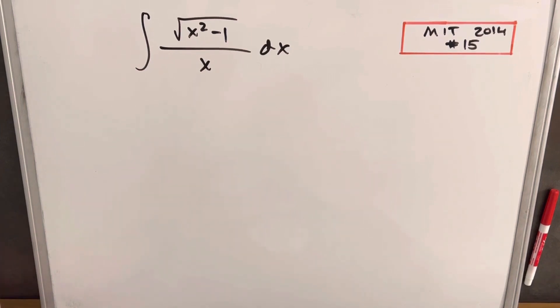Hey, we have here today an interesting integral from MIT Integration B 2014, problem 15. We have the integral of the square root of x squared minus 1 over x dx.